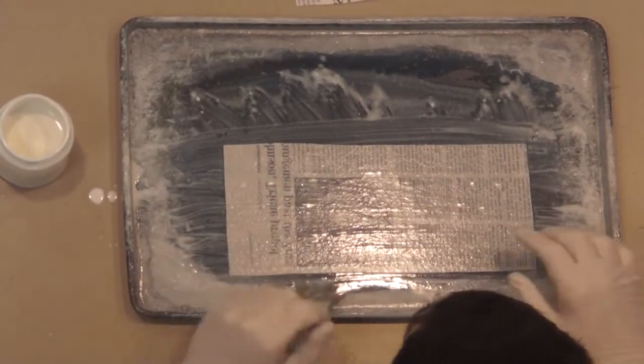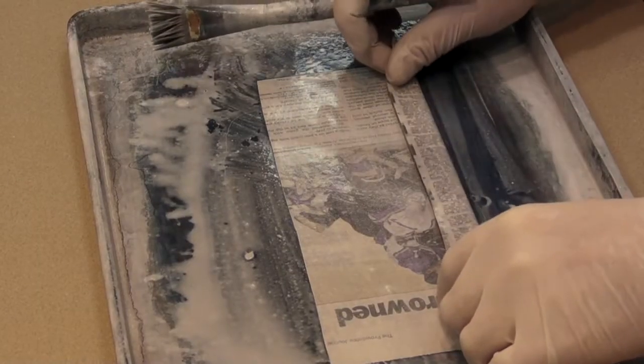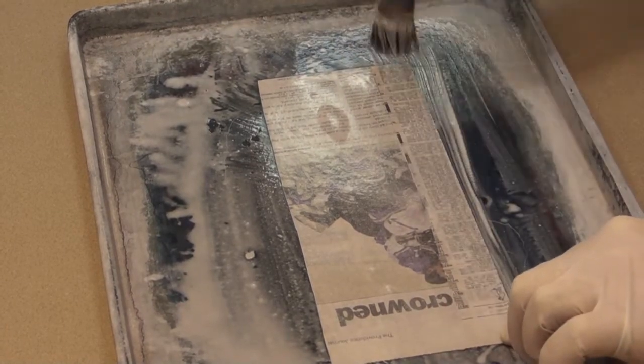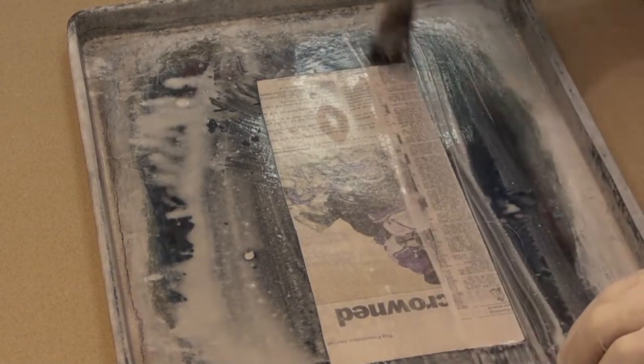Use your brush to lift the newsprint and fold the leading edge up about one inch from the bottom. Remove any air bubbles under the fold with your brush.